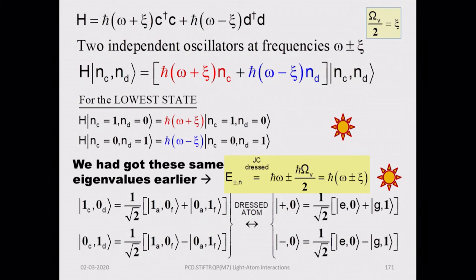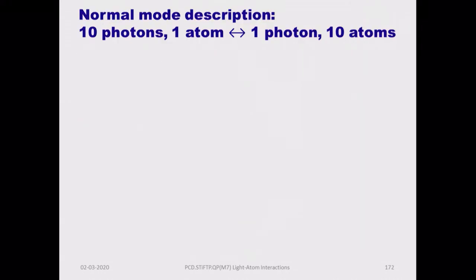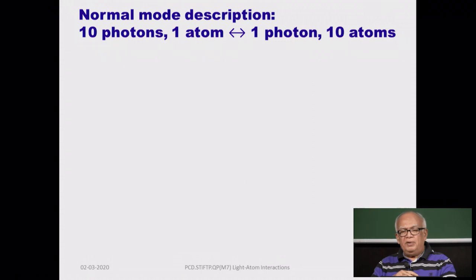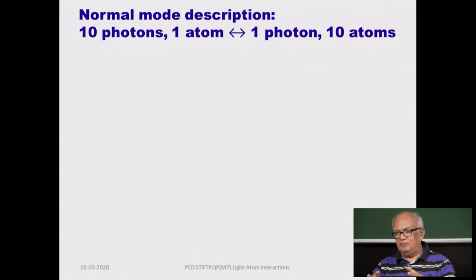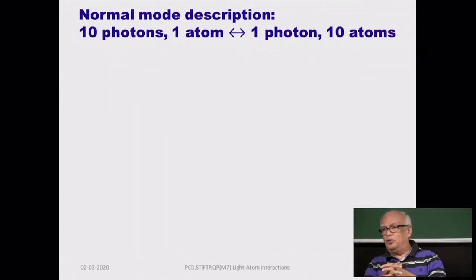The mathematics is completely equivalent and the physics is the same, but the viewpoint is different: earlier we thought in terms of diagonalization of the Jaynes-Cummings Hamiltonian; now we think of normal modes of two coupled oscillators, providing a different type of insight. As a result, it becomes clear that the distinction between the photon and the atom really disappears when you talk about the entangled states.